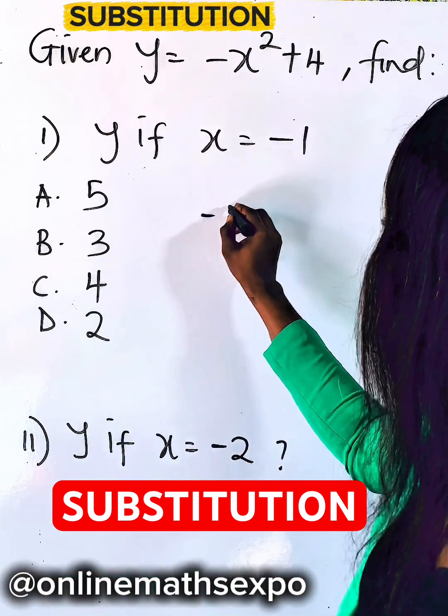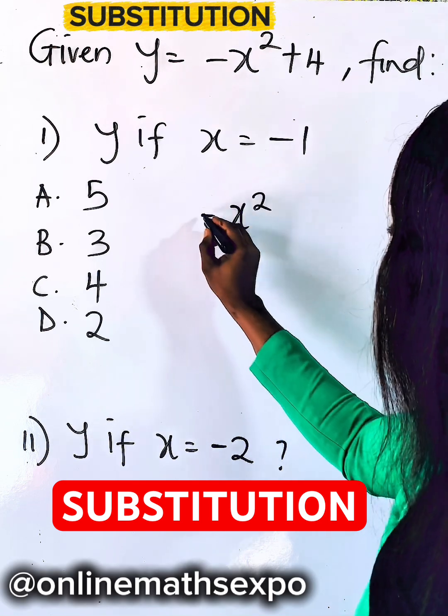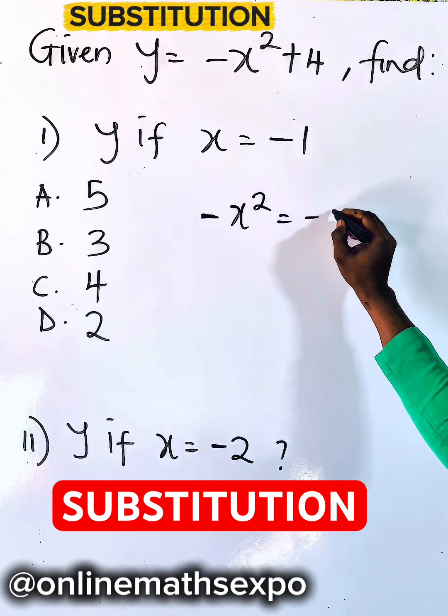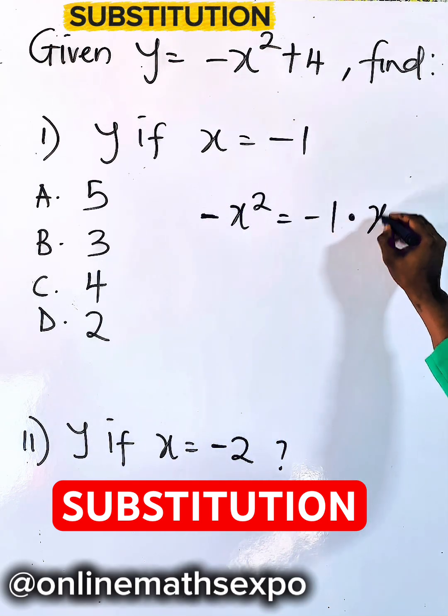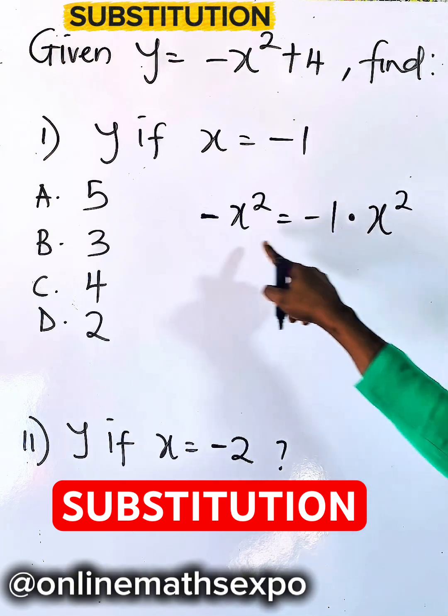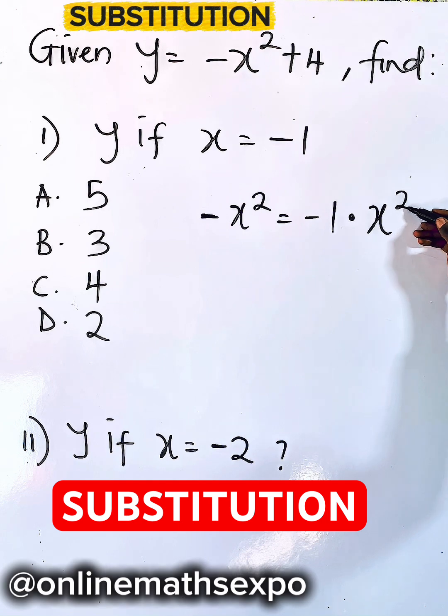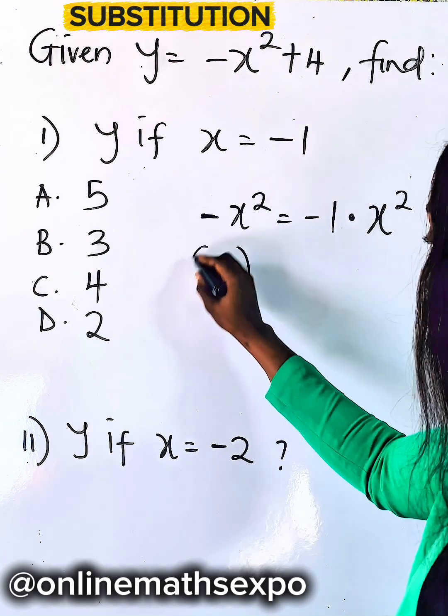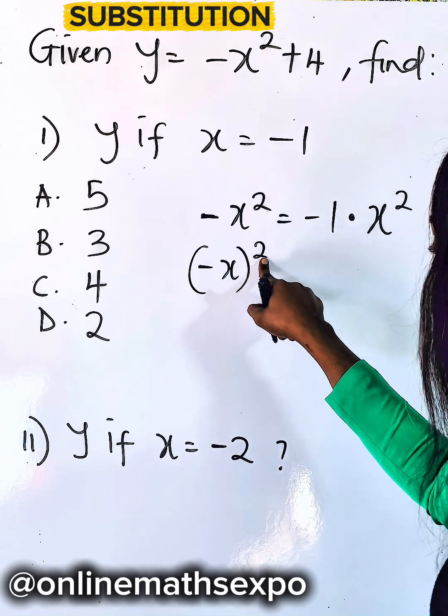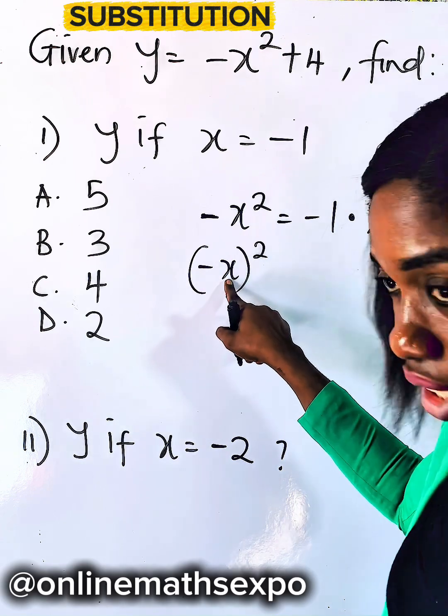When you have -x², this is the same as -1 multiplies x². When you multiply this, it gives you this. And what it means is that the square is only on x. It's different from (-x)² where the square is both on negative and on the x.